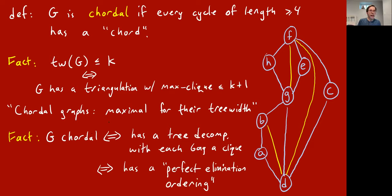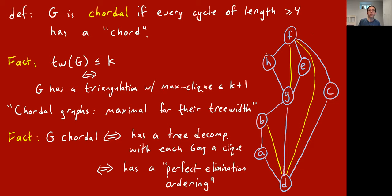A graph is also chordal if it has what's called a perfect elimination ordering — a way to go through the vertices in some order such that when you include a new vertex, its edges go to a clique already in the graph. The perfect elimination ordering for this particular chordal graph is alphabetical order A, B, C, D, E, F, G, H — meaning you start with H and add vertices one by one.